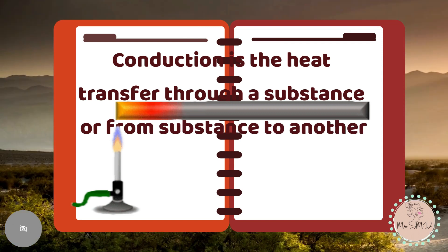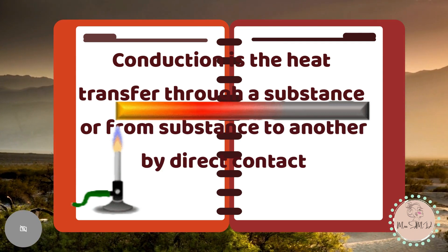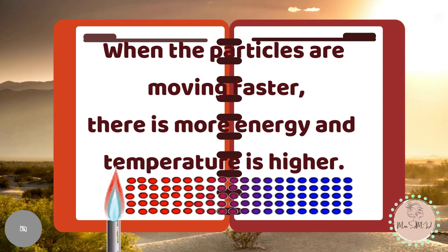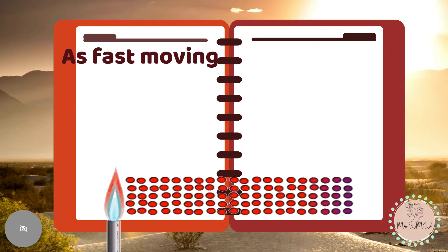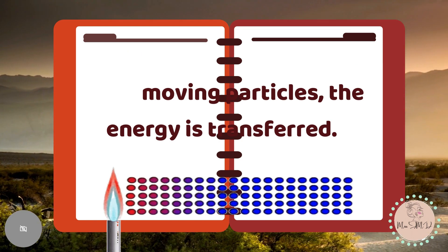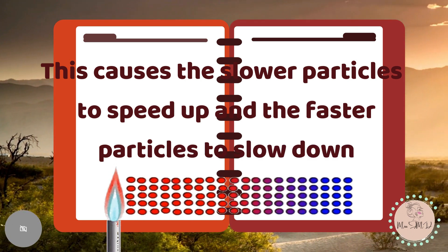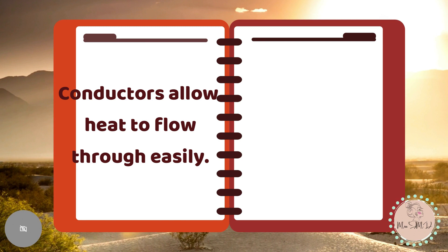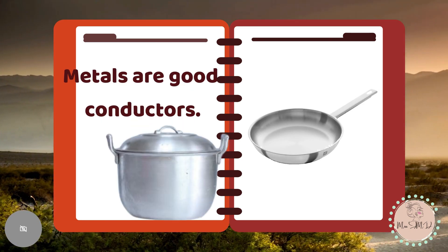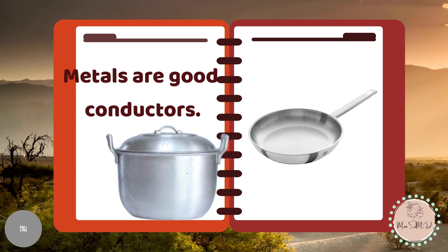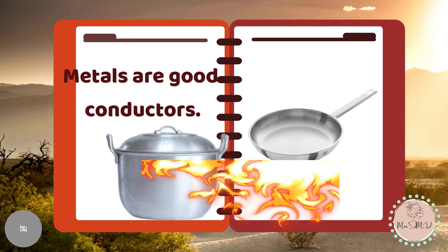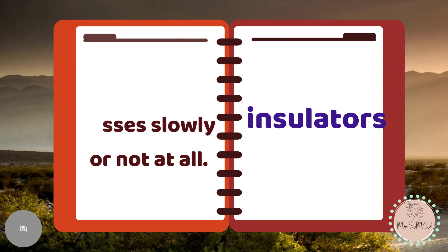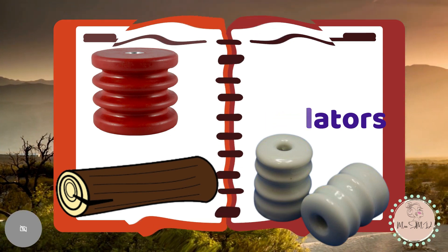Conduction is the heat transferred through a substance or from one substance to another by direct contact. Everything is made up of small particles. When particles move faster, there is more energy and the temperature is higher. As fast-moving particles touch slow-moving particles, the energy is transferred, causing slower particles to speed up and faster particles to slow down. Materials that allow heat to flow through easily are called conductors. Metals are good conductors — that's why we use them as cooking utensils, because heat moves fast through the metal pan. Materials through which heat passes slowly or not at all are called insulators. Some good insulators are wood, plastic, and ceramic.